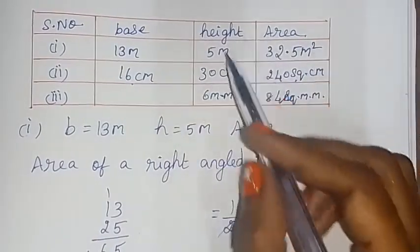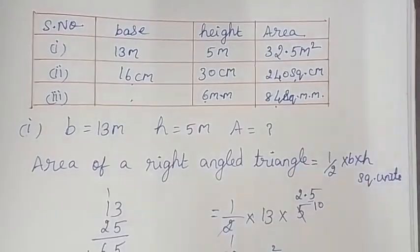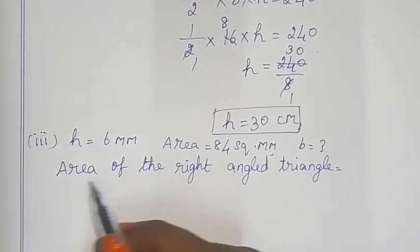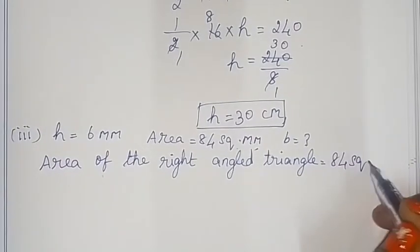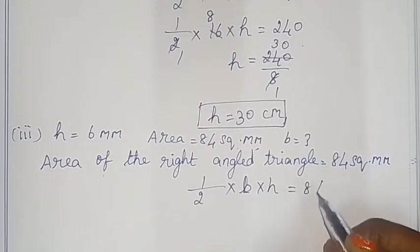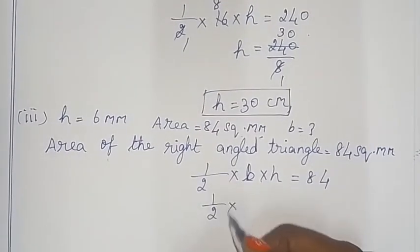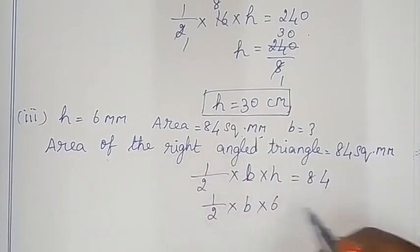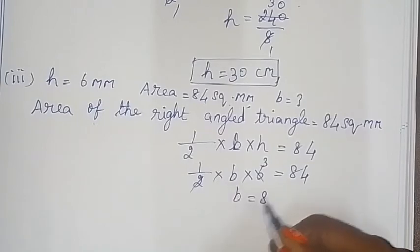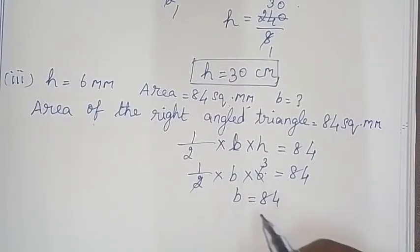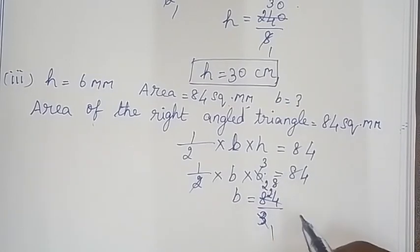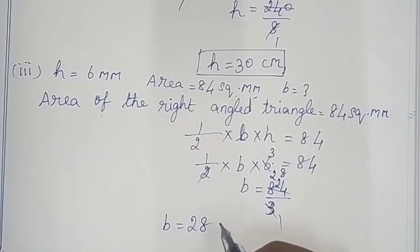In the last triangle, height is 6 mm and area is 84 mm². Area of a right angle triangle = ½ × base × height. So ½ × base × 6 = 84, meaning base × 6 = 168, so base = 168 ÷ 6 = 28 mm. So base is equal to 28 mm. That's all, thanks for watching children!